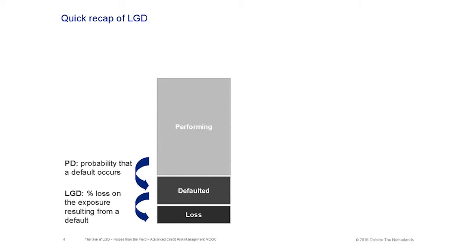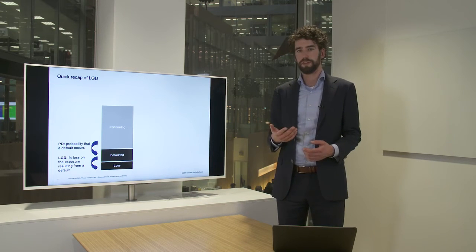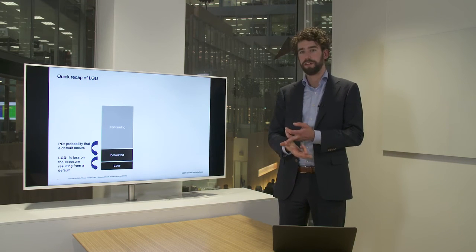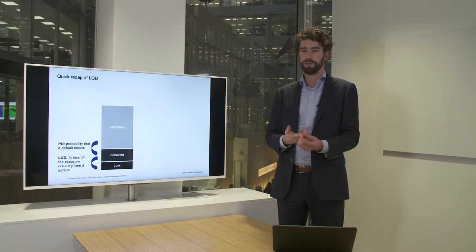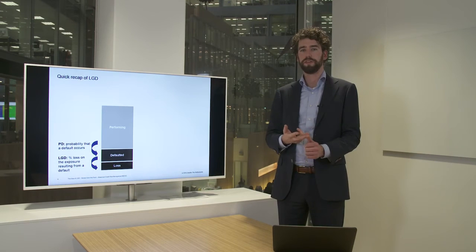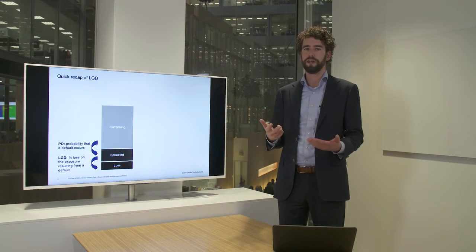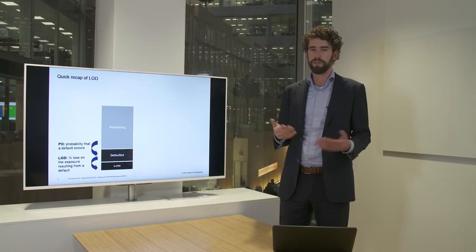Let's take a step back and look at LGD with a simplified example. We can look at a performing exposure going to default, and a default can result in a loss. Probability of default is an estimate of the probability that a client goes from performing to defaulted. Once the default occurs, we want to know how much loss to expect. The loss-given default is the ratio of loss on the exposure resulting from a default. There are already three components: how do we define a loss, how large is the exposure, and what is the definition of default we're using. These three components drive the LGD estimate and define what LGD we're looking at.